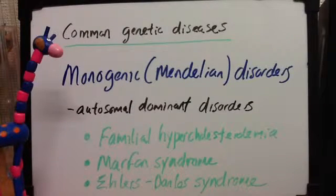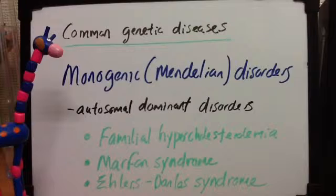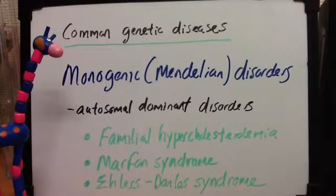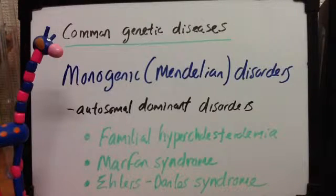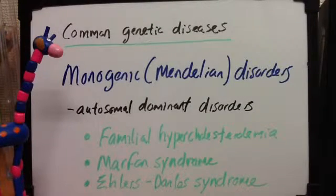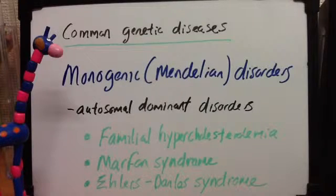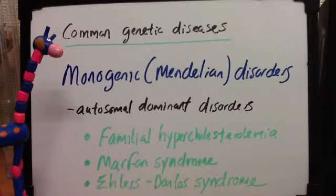Monogenic Mendelian Disorders. We're talking about the mutation of one gene, Mendelian type of inheritance, and today there are about 5,000 different diseases. I'm going to discuss autosomal dominant, autosomal recessive, and X-linked disorders.